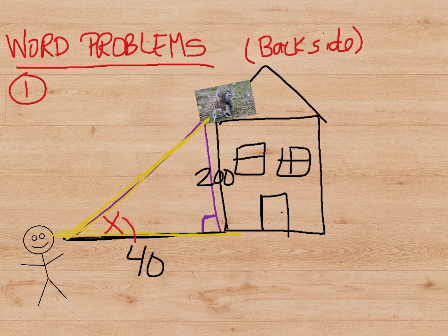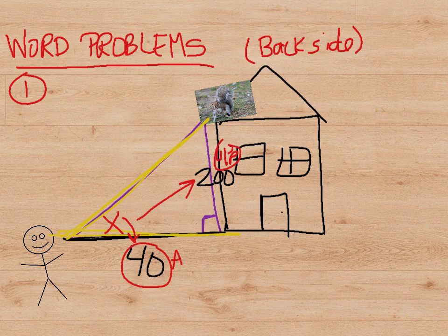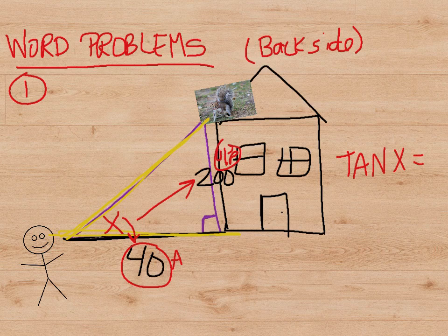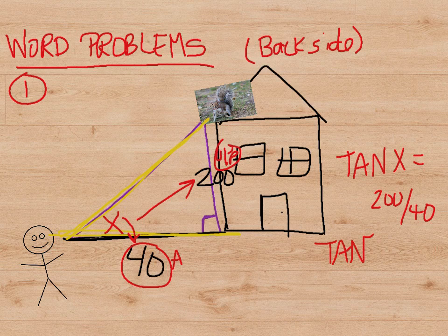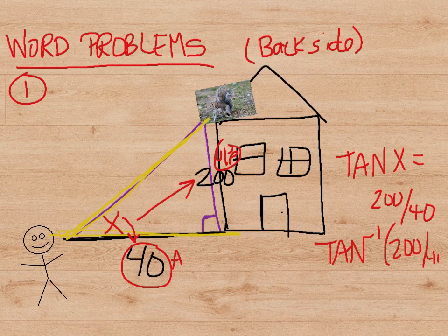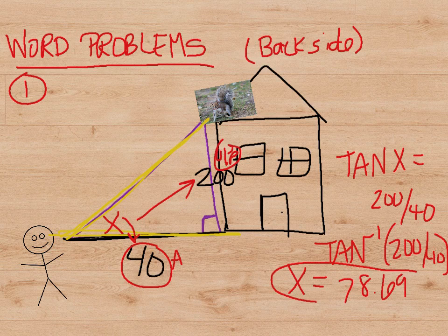Now all I need to do is figure out what trig function I need to use and solve for x. 40 would represent your adjacent, and 200 would represent your opposite. So which function would we use? Hopefully you're thinking that we're going to use the tangent of x equals 200 over 40. To find the missing angle, you have to do the tan inverse, or the tan to the negative 1, of 200 over 40. If you do this in your calculator, you'll find that this is going to be 78.69. So that's how many degrees that you had to look up in order to see the rabid squirrel.